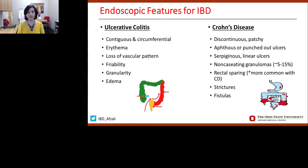For endoscopic features of IBD: ulcerative colitis involves primarily the colon, with a contiguous, circumferential inflammatory process starting in the rectum that can progress to left-sided or even pan-colonic disease. Crohn's disease is more of a patchy disease within the colon, with additional involvement of the small bowel elsewhere. The disease phenotype is based on whether we see strictures or fistulas, based off of radiographic imaging as well.